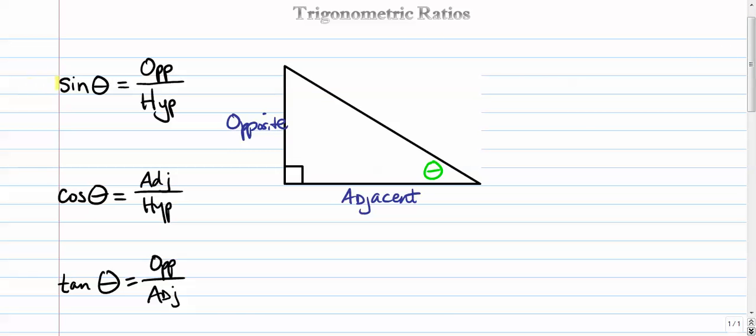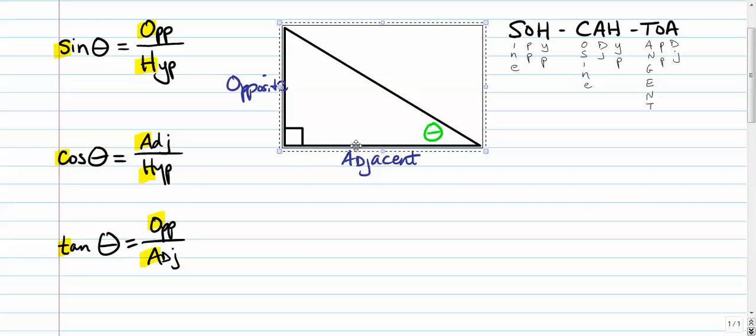And the best way to memorize those is to use the old trick that all your teachers know. SOHCAHTOA. That mnemonic device is something that we can memorize pretty easily. And all your teachers probably teach it to you the same way. It's SOHCAHTOA, where it basically boils down to sine is opposite over hypotenuse, cosine is adjacent over hypotenuse, and tangent is opposite over adjacent. That's the easiest way to memorize it, SOHCAHTOA. So let's see what this actually means. Let's do some examples.